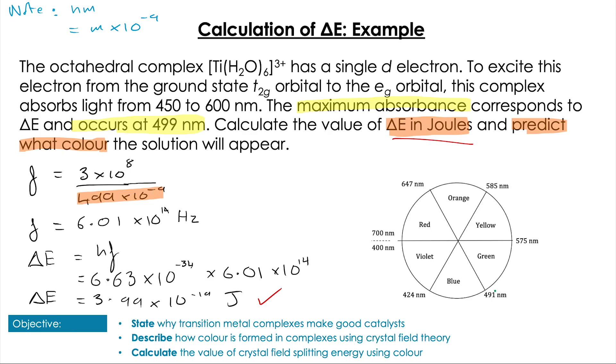Now that's not all the question asked, because it also asks us to predict what color the complex will be. So here we're going to use the wavelength of light that was absorbed and use our color wheel again. We had an absorbance of 499, so we just draw a straight line across the color wheel and we end up in the red quadrant. So we would expect this complex solution to be red.